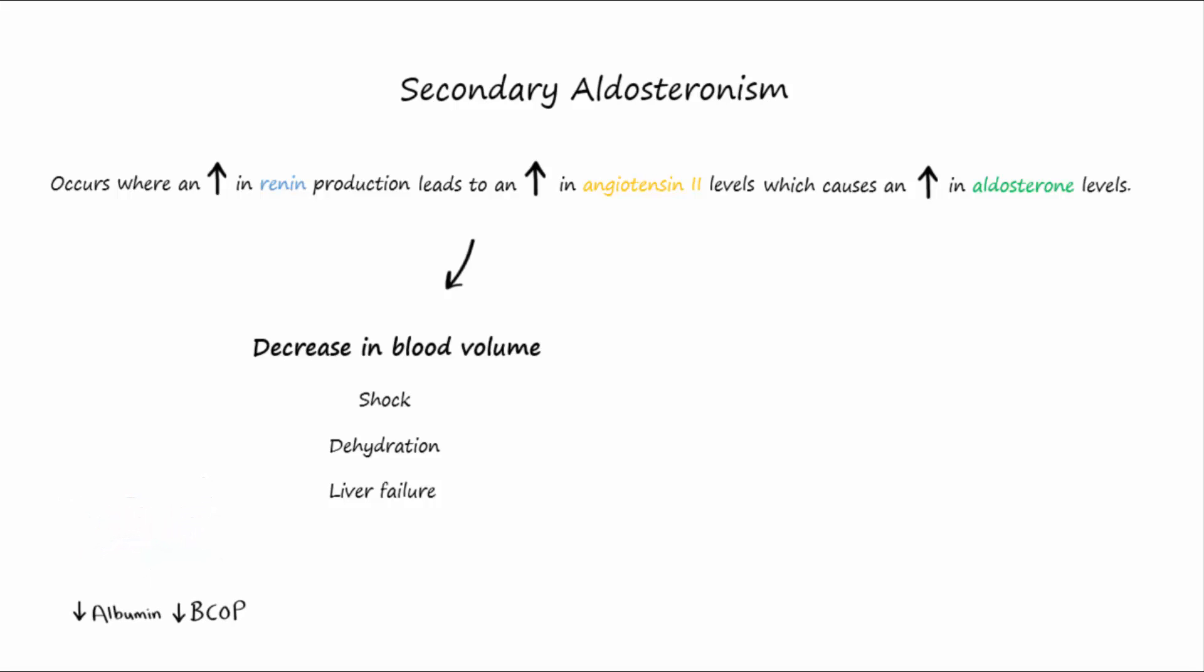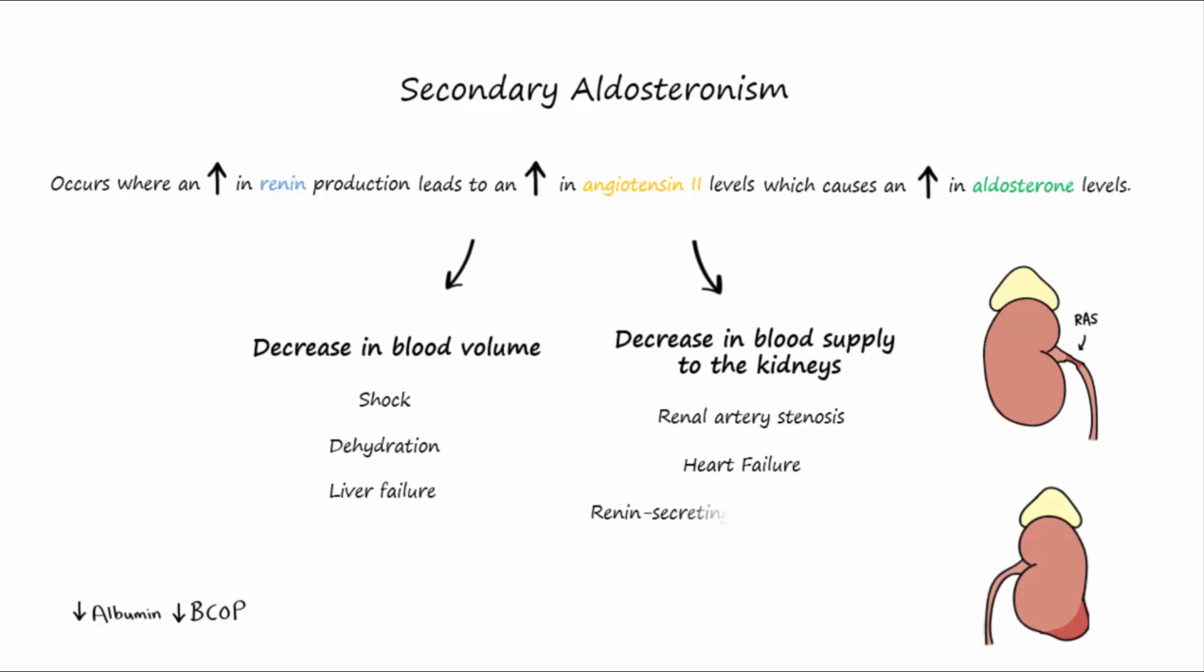There are also conditions that result in less delivery of blood to the kidneys that will increase aldosterone levels. Examples of this are renal artery stenosis and heart failure. Renin secreting tumors can also bring about secondary aldosteronism.